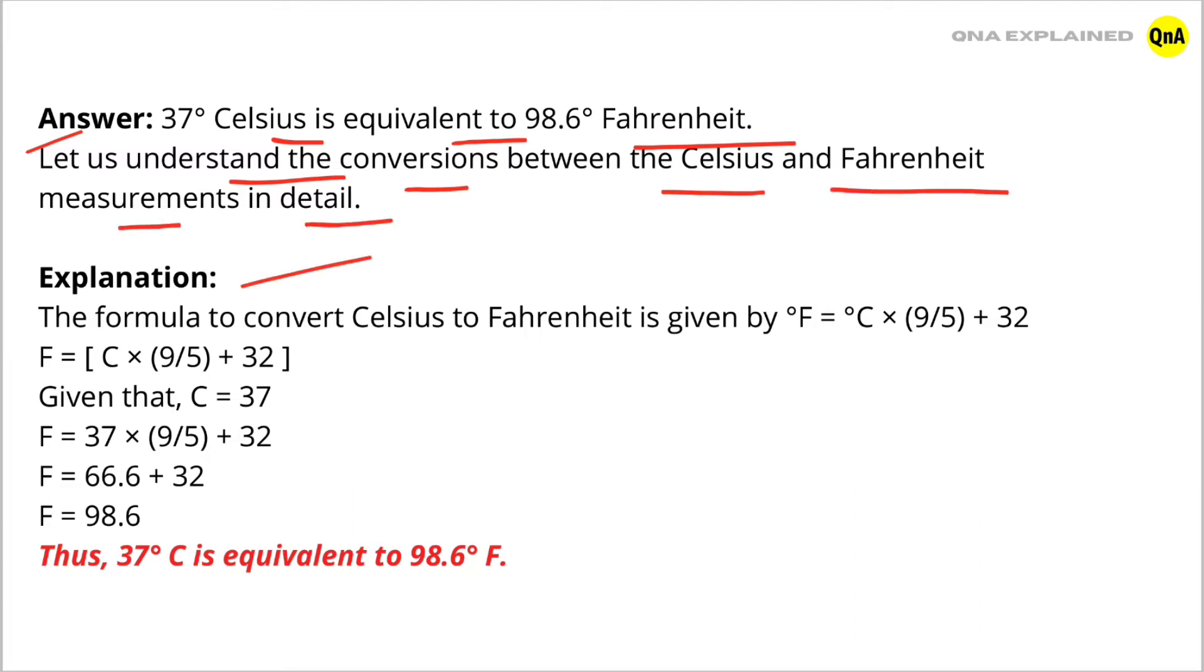Explanation: The formula to convert Celsius to Fahrenheit is given by F = C × (9/5) + 32. Given that C = 37, put the value of Celsius in this formula. F = 37 × (9/5) + 32, which equals 66.6 + 32, so F = 98.6.